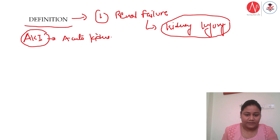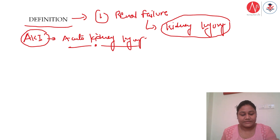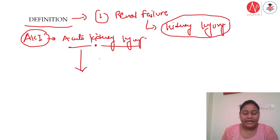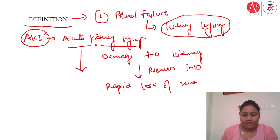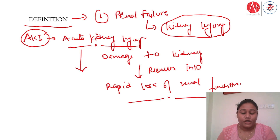So our topic of discussion today is acute kidney injury. How do we define it? Acute kidney injury can be defined as damage to the kidney which results in rapid loss of renal function. The kidney, like the heart and lungs, is a vital organ, so any form of injury to it will result in rapid loss of renal function.